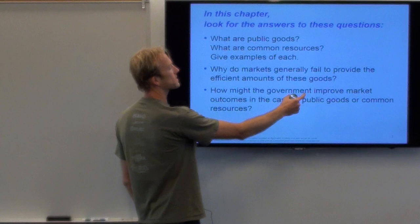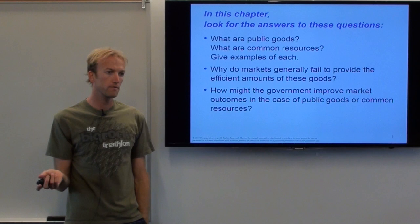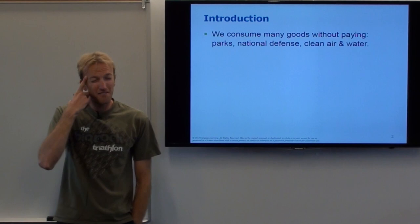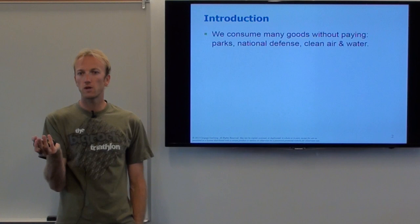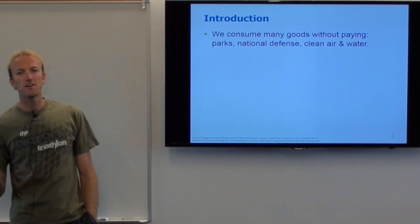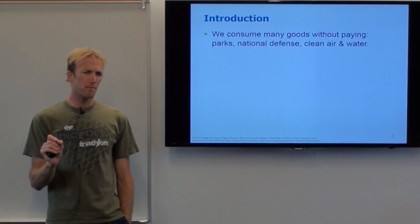The third question is: how is the government going to get involved to fix these broken markets? I want you to start thinking of goods that we consume without paying — for example, parks, national defense, air, water. We use these goods, we consume them, but there's no price. This is a market difference from every other good we've thought about so far — hamburgers, hot dogs, apples — where there's a clearly defined price.